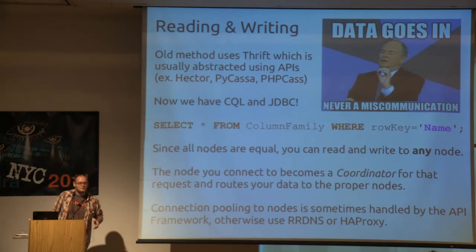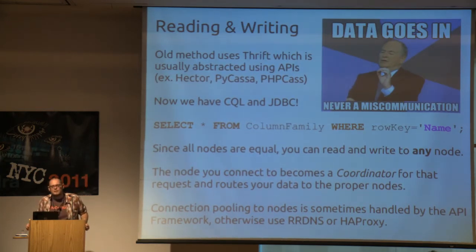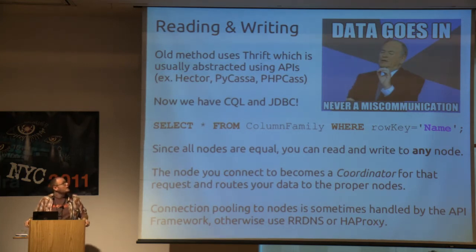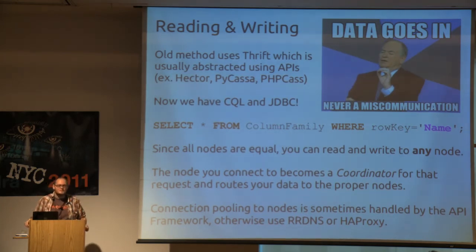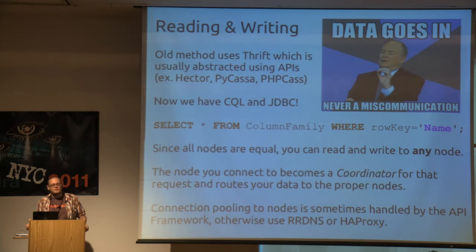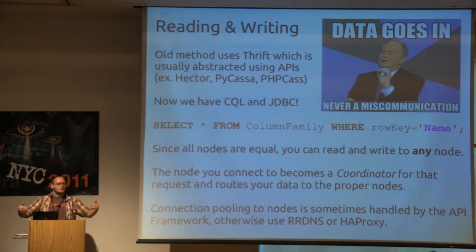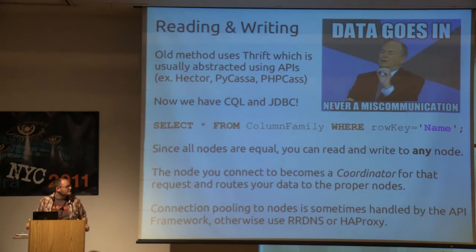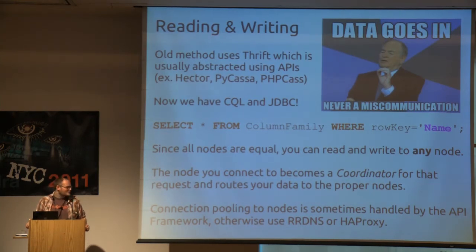Getting your data into Cassandra used to be mostly through Thrift, then you'd wrap it in an API and use Hector, PyCassa, or whatever. We use Hector, but now there's CQL and JDBC. All nodes are created equal since there are no master nodes — whatever node you connect to coordinates reads and writes for your connection. You can talk to all your nodes from different clients and push a lot of data in parallel. Connection pooling is sometimes done in the framework, sometimes through round-robin DNS, or if you're adventurous, you can throw it in HA Proxy.